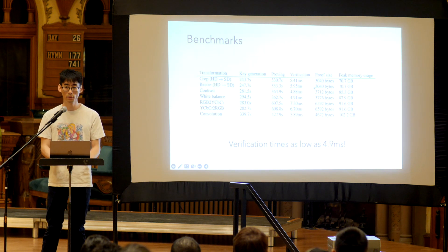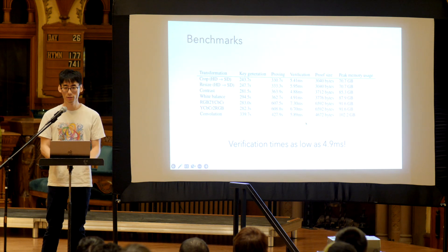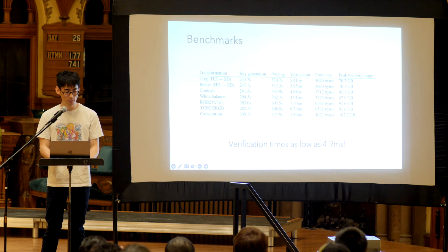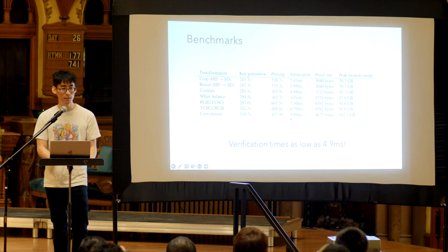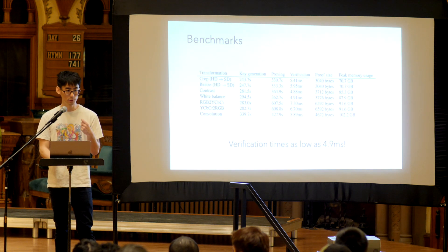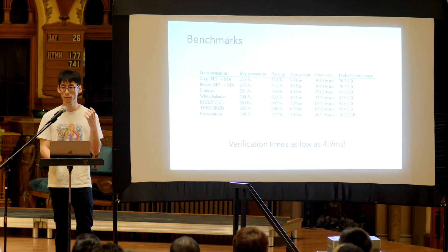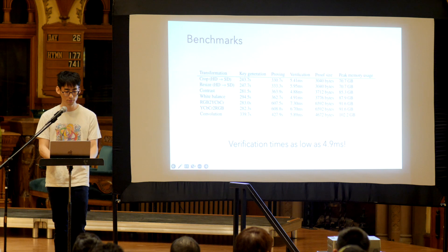Proof sizes are relatively lightweight, around three kilobytes. One cool result in zero-knowledge proofs is that for the convolution, the verification time is actually cheaper than running the convolution itself. So for social media consumers, it can actually be cheaper to verify the image edit than it would be to replay the image edit, even if you gave them a non-private transcript of the original image and the edit itself.